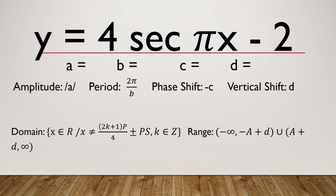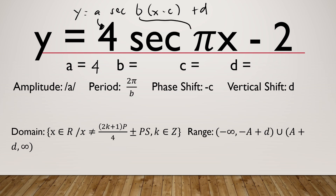Let's try another example: y is equal to 4 secant pi x minus 2. Again, the first thing is to check if this function is in its standard form — y equals a secant b times quantity x minus c, plus d. As you can see, it is in standard form. So a is equal to 4. For b, since there is no parenthesis, the numerical coefficient of x is pi, so b is equal to pi. For c, since there is no parenthesis, c is equal to 0. For d, that's the constant term: d is equal to negative 2.